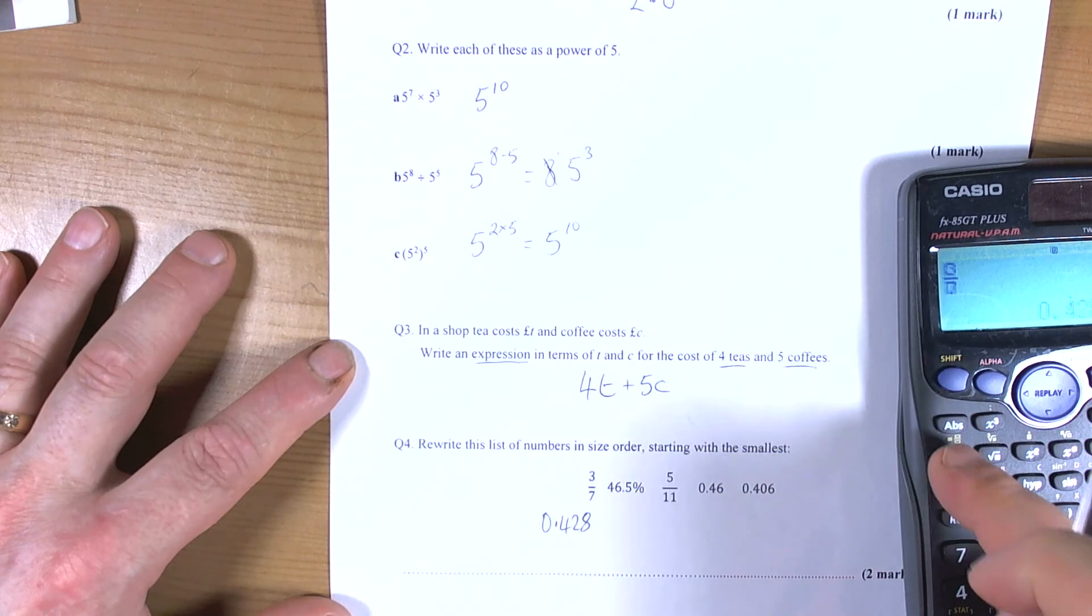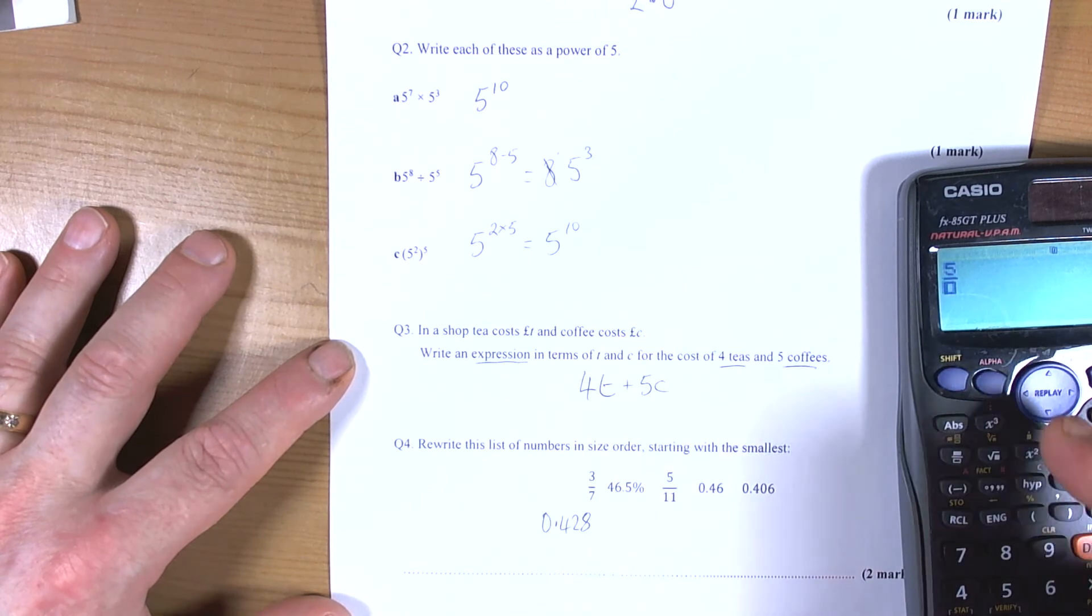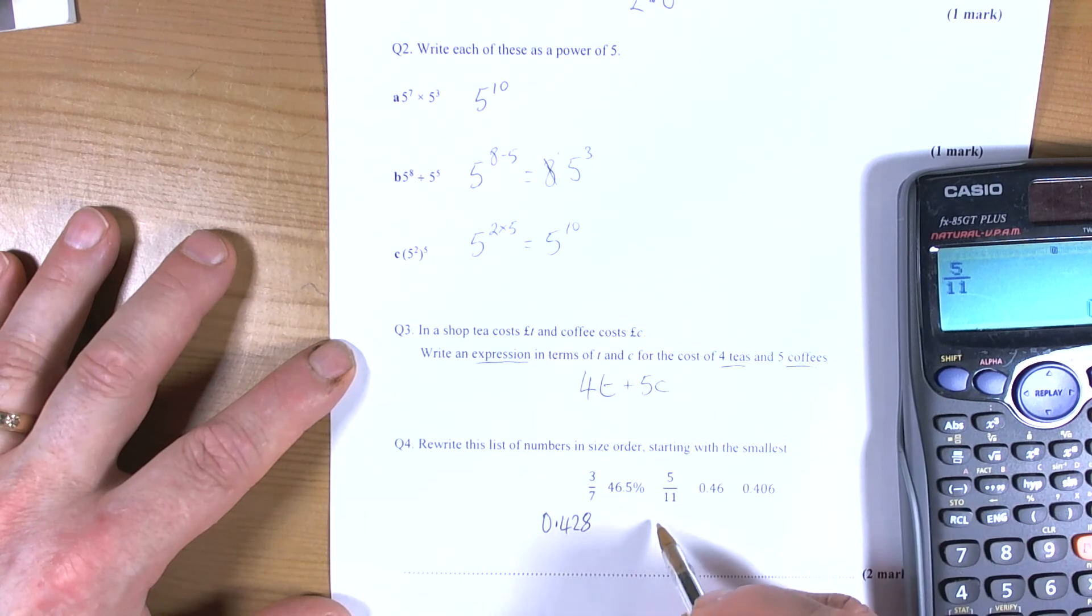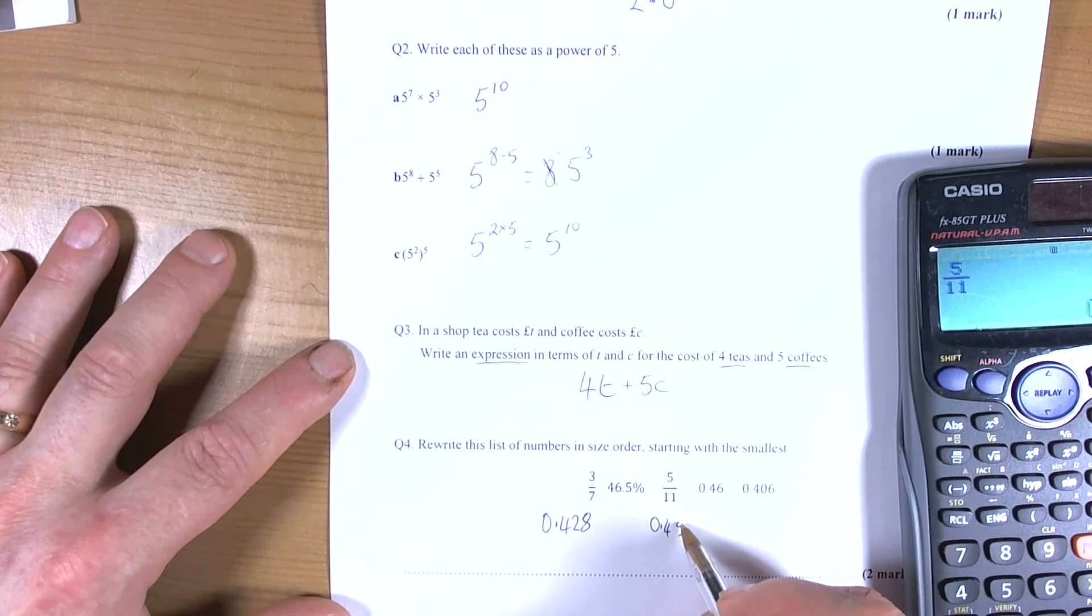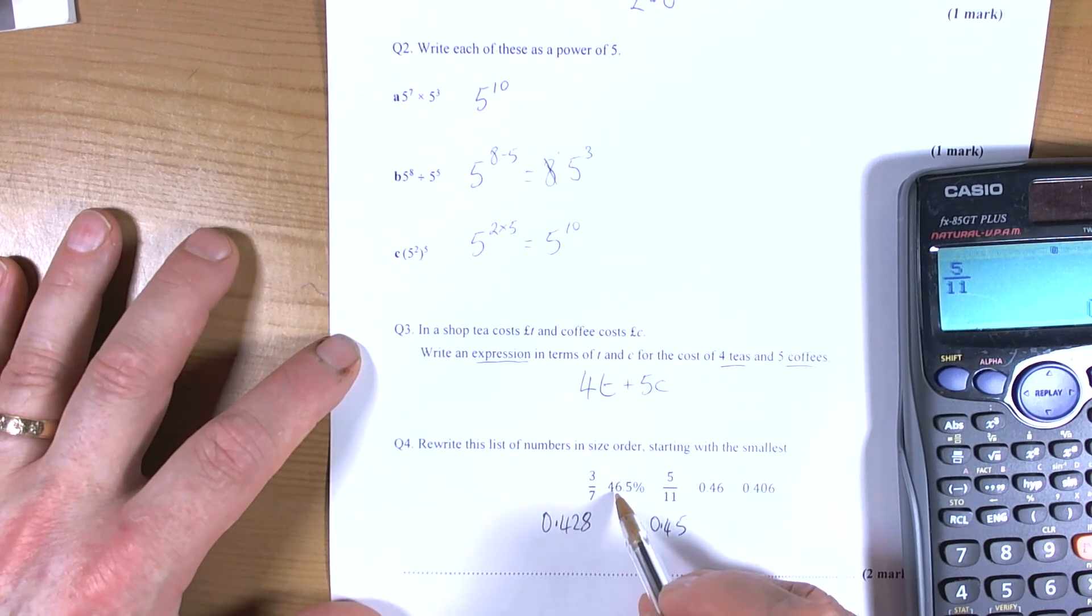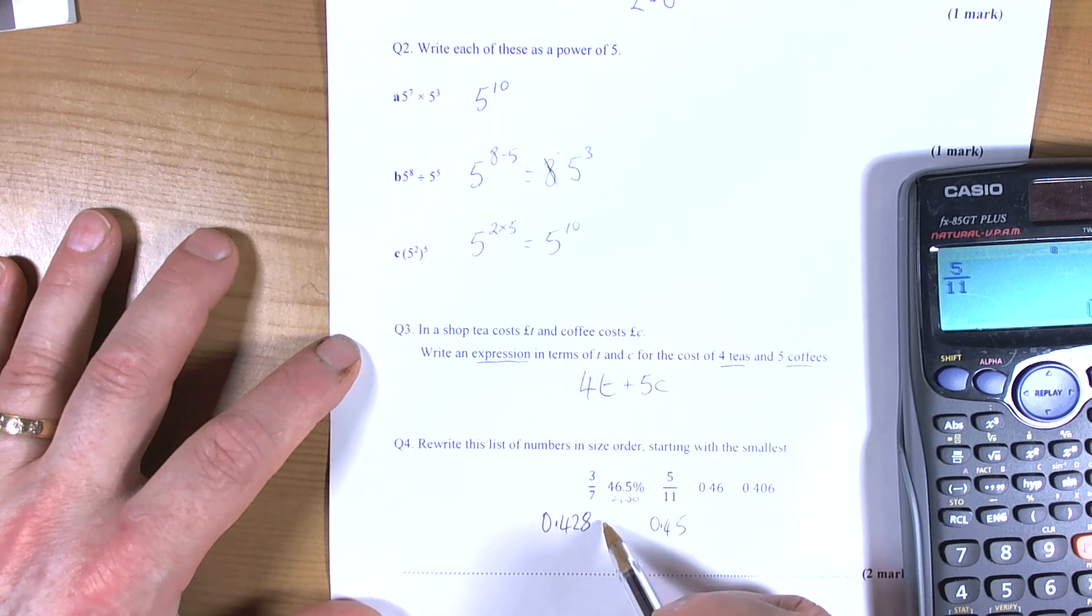And if there's a percentage, to convert to a decimal we divide by 100. So it becomes 0.465.